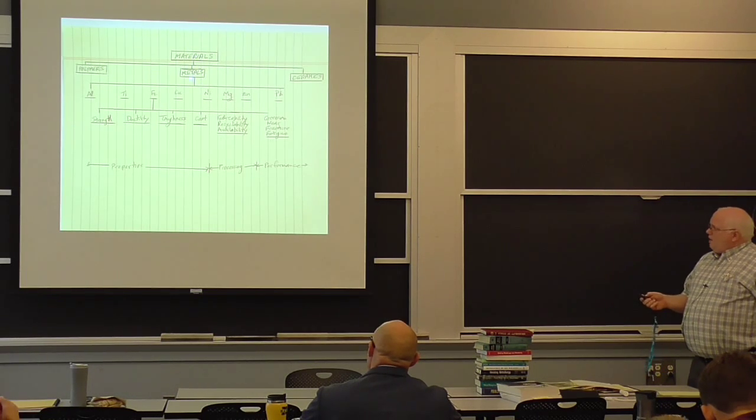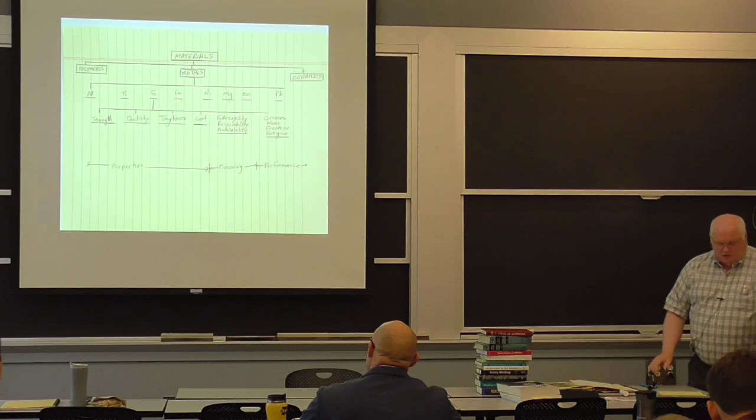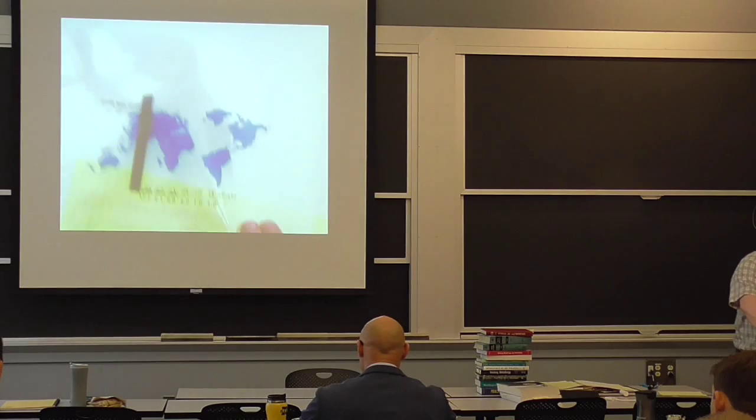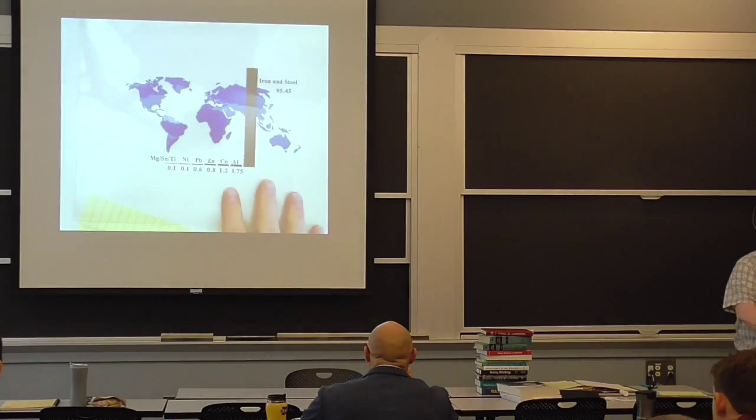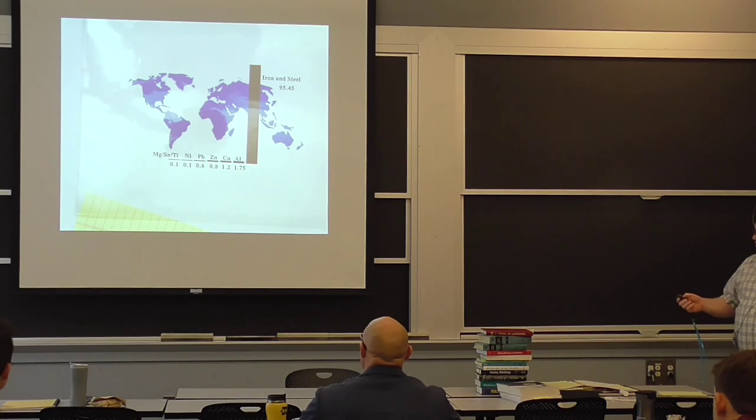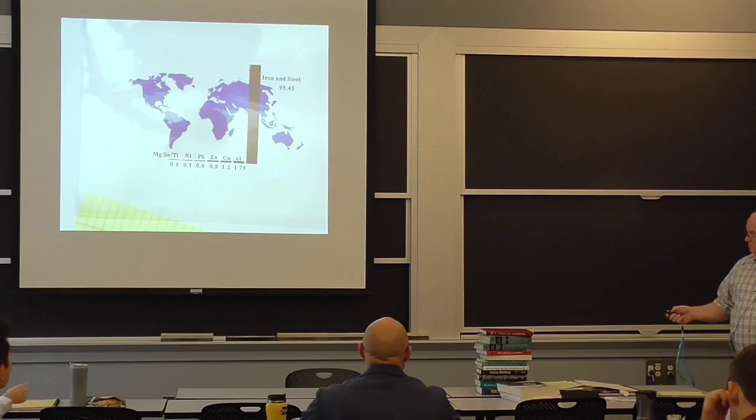So metals have this property called ductility, and there's a whole bunch of metals. I listed these metals for a particular reason - they're the ones that show up on this graph in a handout that will show up on Stellar, with an article I wrote called The Future of Metals. It turns out 95 pounds out of every 100 pounds of metal made in the world is steel.